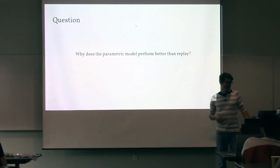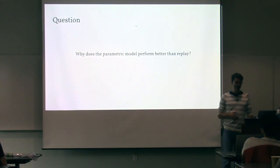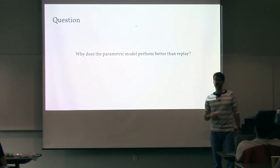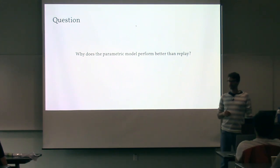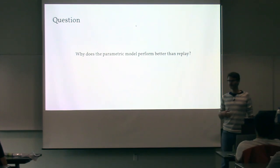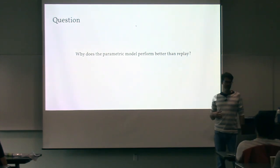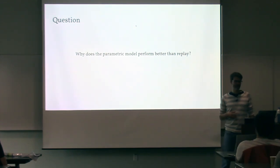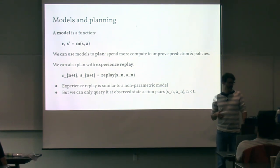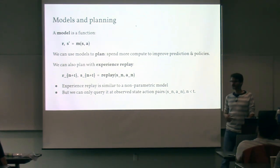This raised a question for me: why does the parametric model in this case perform so much better than replay? Because RainbowDQN, being in the family of DQN algorithms, uses replay. So how does replay compare to a model?